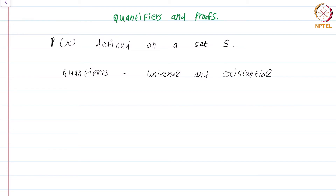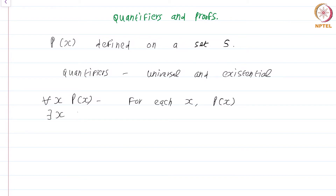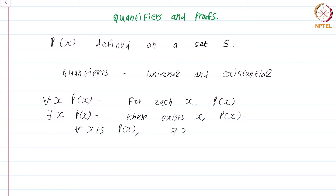So let me briefly recall what they are. The universal quantifier is a statement of the type: for each x, p of x. The existential quantifier is written as: there exists x, p of x. If you want to be 100 percent precise, you must write: for all x in S, p of x; and there exists x in S, p of x.